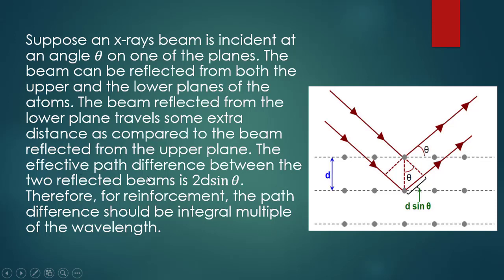The effective path difference between the two reflected beams is 2d sin theta. Since sin theta equals perpendicular over hypotenuse, the perpendicular distance is d, so the path difference works out to 2d sin theta. For reinforcement, the path difference should be an integral multiple of the wavelength.